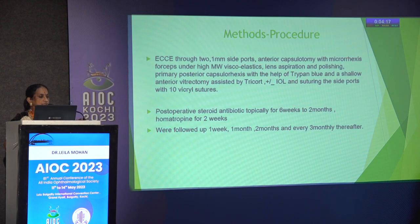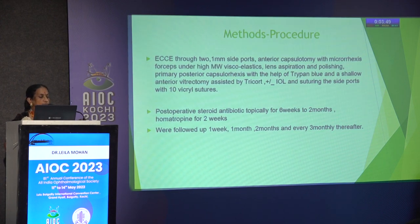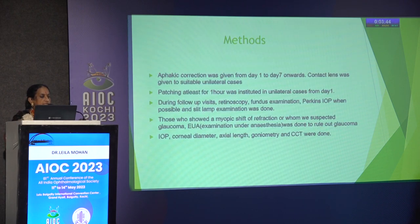Under anesthesia, slit lamp examination, corneal diameter, axial length with A-scan, keratometry with handheld keratometer, and IOP with Perkins were done. Children with unilateral cataract and corneal diameter above 10.5 mm and axial length above 19 mm had IOL implantation. All bilateral cases were left phakic. The ECC procedure was done through two 1 mm side ports, anterior capsulotomy, microrexis with microrexis forceps under high molecular weight viscoelastic, lens aspiration, polishing, primary PPC with trypan blue, and shallow anterior vitrectomy with or without IOL. Post-operative steroid antibiotic topically was given for 6 weeks to 2 months. Aphakic correction was given from day 1 to day 7 onwards.